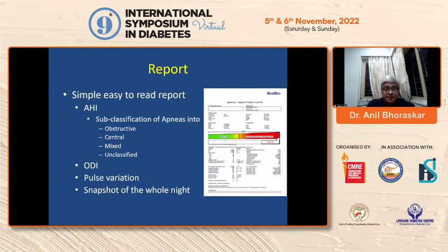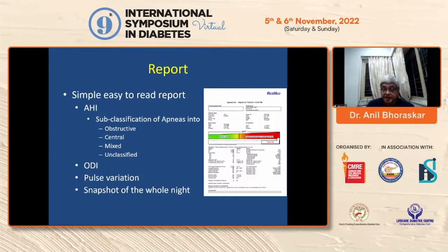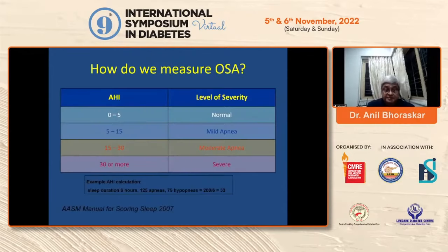The report provides a simple, easy-to-read subclassification of apnea into obstructive, central, mixed, and unclassified. Central means something is wrong with the brain; mixed is both. There is also pulse variation and a snapshot of the whole night. The apnea-hypopnea index (AHI) tells you the severity. Zero to five is normal; five to fifteen is mild apnea; fifteen to thirty is moderate apnea; more than thirty is severe apnea. If AHI is higher than 15, it is a serious matter.